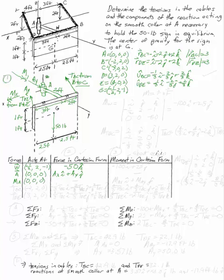There is also a moment at A acting at the origin. It has no force component, only a moment, written in Cartesian form as MAXi + MAYj. The tension TBC acts at point B = (-2, 2, 0), and its Cartesian force is (-1/3)TBCi - (2/3)TBCj + (2/3)TBCk. Similarly, TDE acts at point D = (3, 2, 0) with force (1/3)TDEi - (2/3)TDEj + (2/3)TDEk.